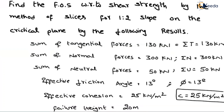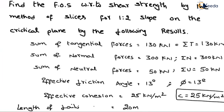Any other data? L is not given directly. We can call it the length of the failure arc or length of the failure plane. The length of the failure plane is given as 20 meters, so summation of L equals 20 meters.